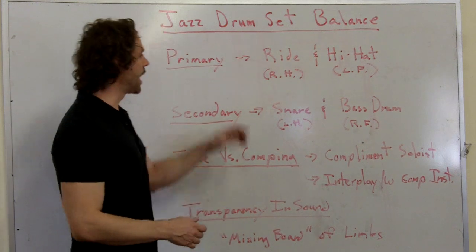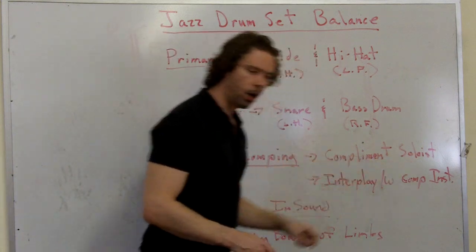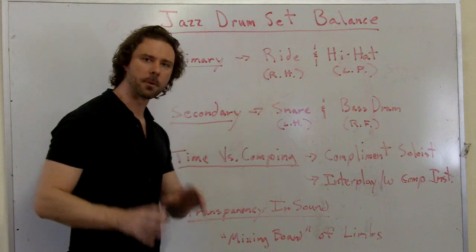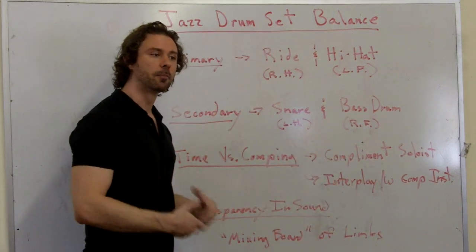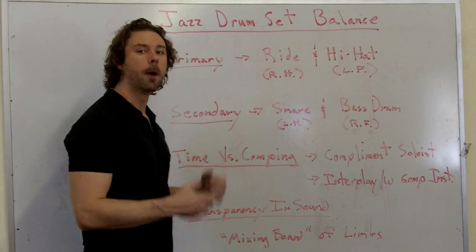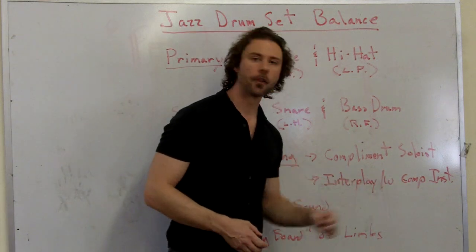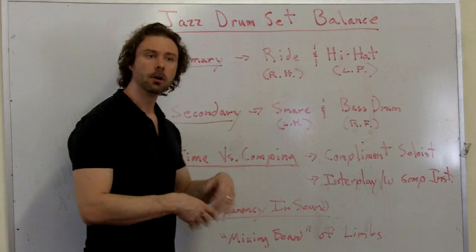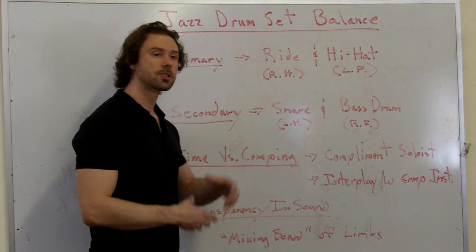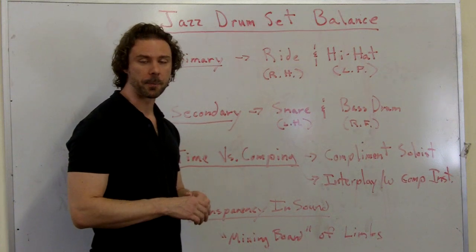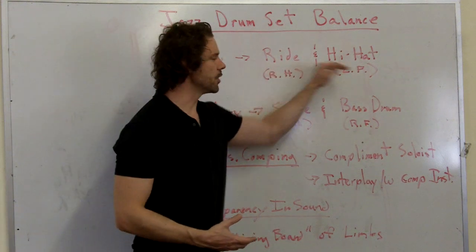Now, time versus comping. We have our time in the ride cymbal and hi-hat, and then our comping are the rhythmic ideas that we use on the snare drum and bass drum underneath to complement the soloist and give them a level of propulsion and energy and help them build and structure their ideas. It's also for interplaying with the other comping instrument. This may be a piano or a guitar, or in a big band situation, it could be pre-written parts, say in a horn section, also accompanying or comping behind the instrument. And this comping is going to be underneath the time.